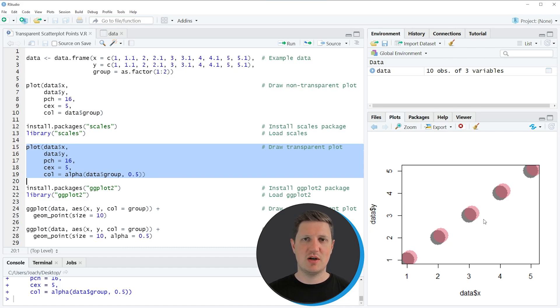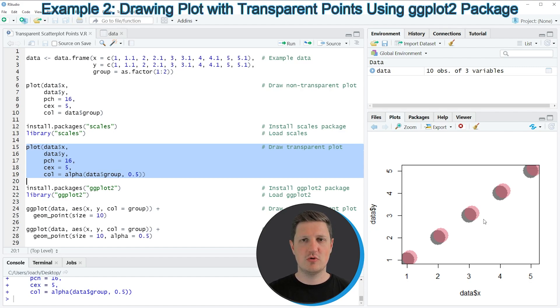Now, in this first example, I have shown you how to draw a plot with transparent points using the basic installation of the R programming language and the scales package. However, it is also possible to create a scatter plot with transparent points using the ggplot2 package, and this is what I want to show you in the next example.